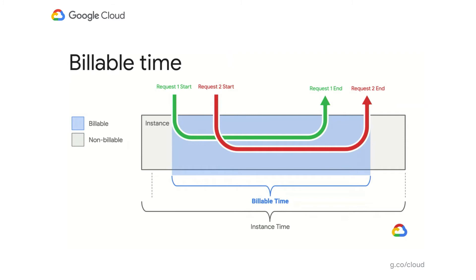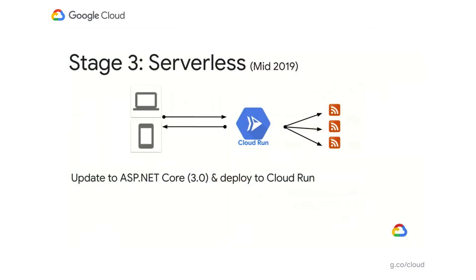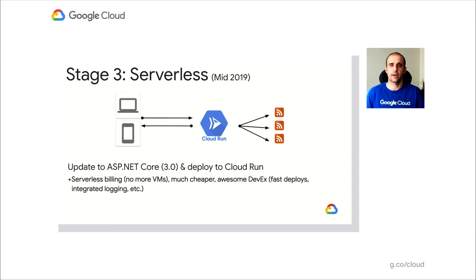So with these in mind, we tried to deploy our application to Cloud Run in mid-2019. To do that, we first upgraded our application to ASP.NET Core 3.0, and then deploying to Cloud Run was a single command — gcloud run deploy — and it was there. We didn't have to change anything. With this, we got serverless billing, which really brought down our costs considerably because we weren't paying for anything when our application wasn't being used. We also got an awesome developer experience with fast deploys — within seconds instead of minutes — integrated logging with Stackdriver, and all the features of Cloud Run with traffic management and revision management.